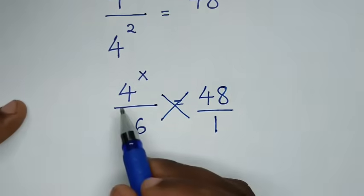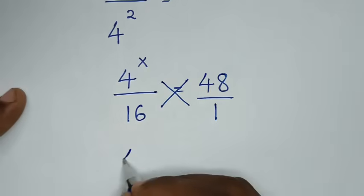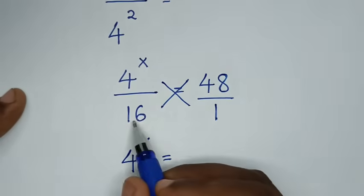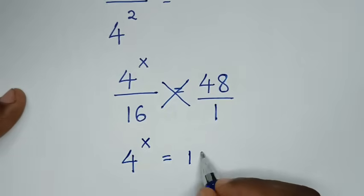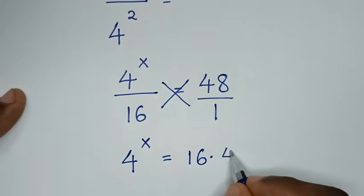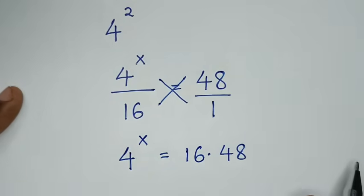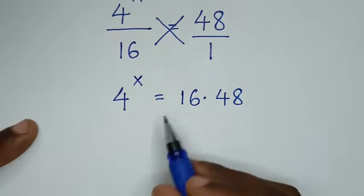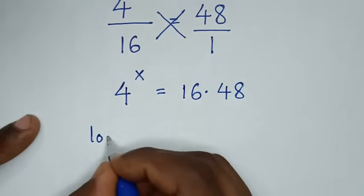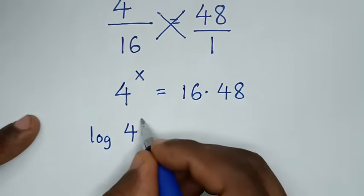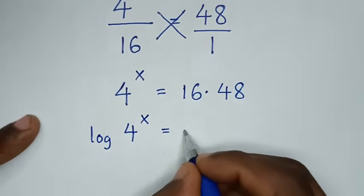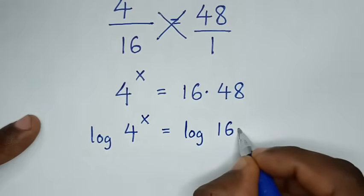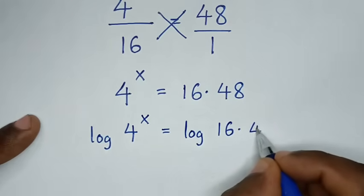Then it will be 4 power of x times 1, which is 4 power of x, is equal to 16 times 48. In the next step, we'll apply log in both sides. So it will be log of 4 power of x is equal to log of 16 times 48.